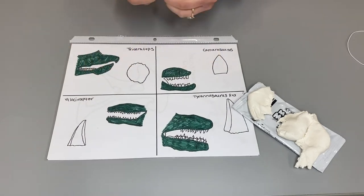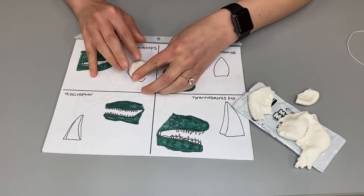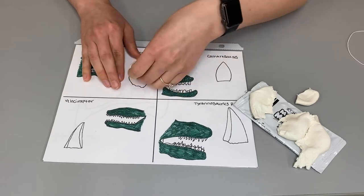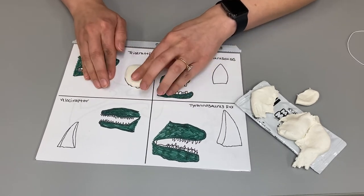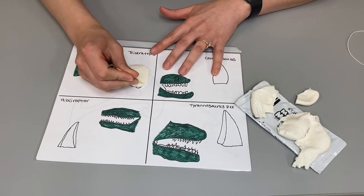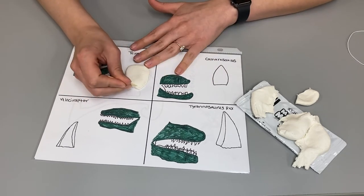Use the tooth on the template as an example, and begin to shape and add a texture that would best resemble the dinosaur tooth you picked. I went ahead and used the toothpick to help me add texture and shape the tooth.